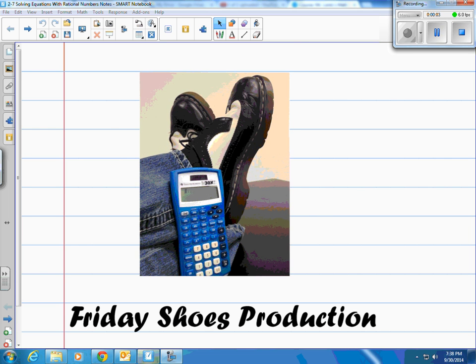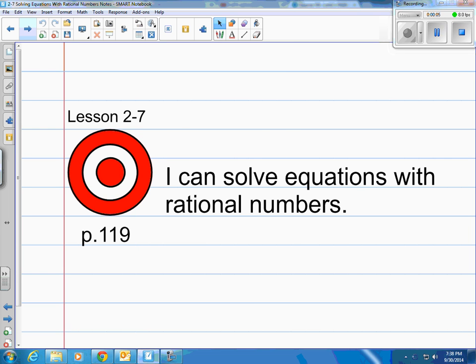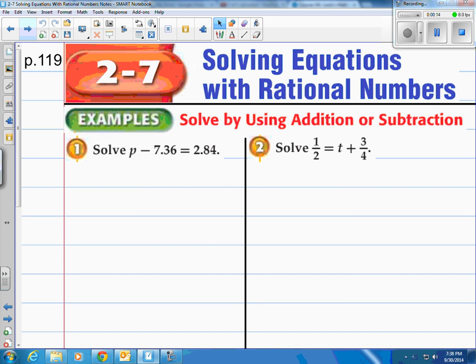This is a Friday Shoes production. The lesson is 2-7 on page 119 in our book. The target is I can solve equations with rational numbers. What's nice about this is we've actually already solved problems like this one-step equations when we just had integers. Now we're dealing with the vast rational numbers which include all the decimals to the right of the decimal point and any fraction. So let's take a look, it's going to be very similar to what you've done before and we're going to follow those same steps.